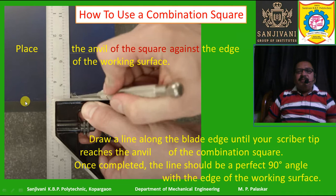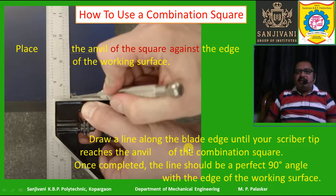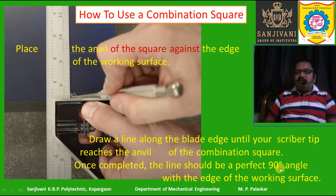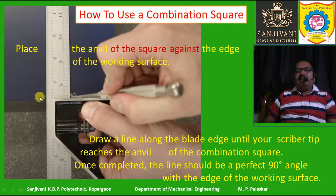The anvil is placed against the edge of the working surface, then draw a line along the blade edge until your scriber tip reaches the anvil. Once completed, the line should be at a perfect 90-degree angle with the edge of the working surface. Similarly, you can draw several marks — according to these marks, cutting of a particular job will be easier, or if you want to make slots, this marking is useful.